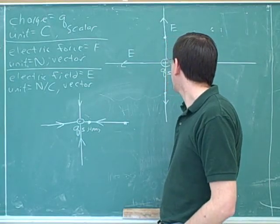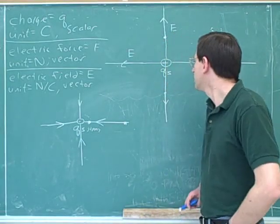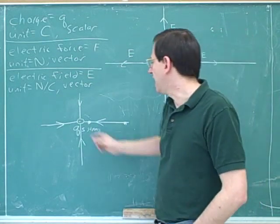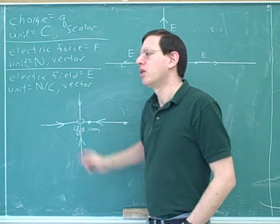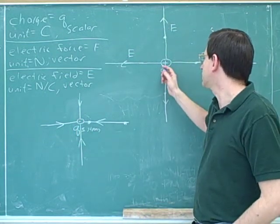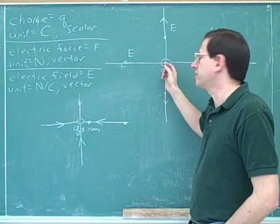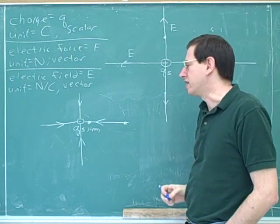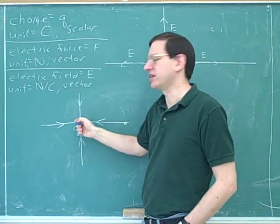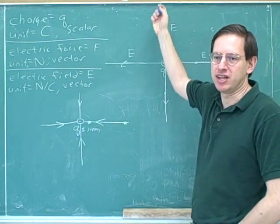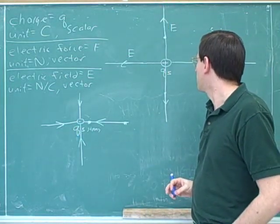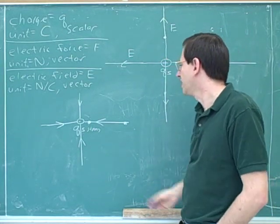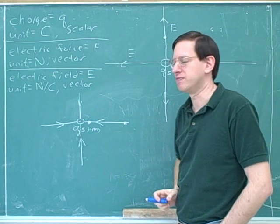Notice that electric field lines tend to start on positive charges and tend to end on negative charges. More precisely, an electric field line starts on a positive charge or at infinity, and an electric field line ends at a negative charge or at infinity. So the starting point is either a positive source charge or at infinity, and the ending point is a negative charge or at infinity.